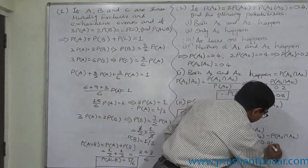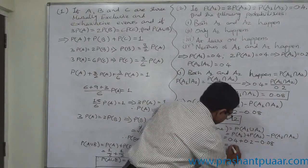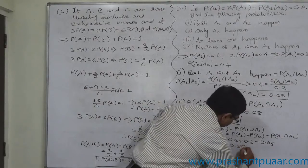0.4 plus 0.2 minus 0.08. Answer is 0.52.